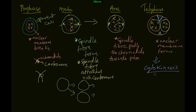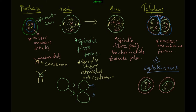Cytokinesis is the process of separating the cytoplasm. The cell starts to divide from where the two nuclear membranes meet, creating two whole new cells. After the nuclear membranes are formed, the cell divides from the edge and you get two daughter cells. This is basically mitosis cell division.